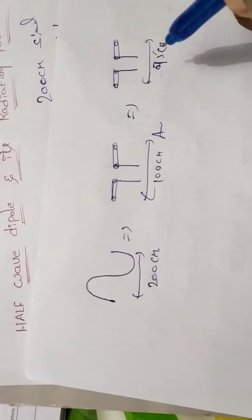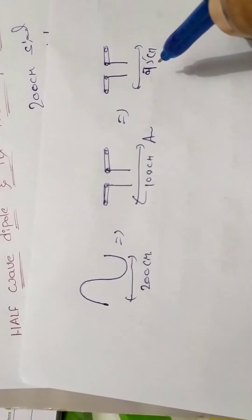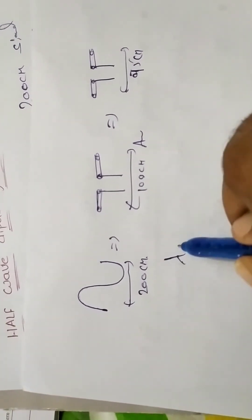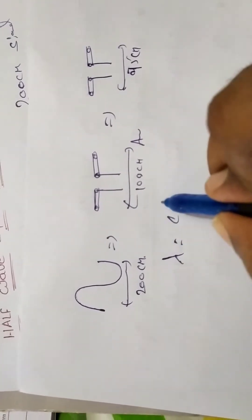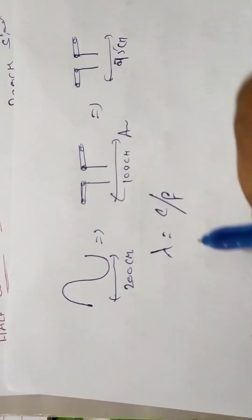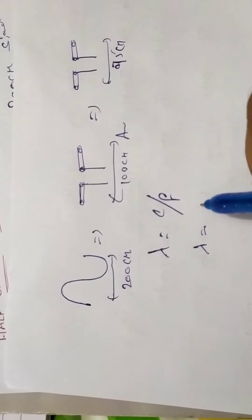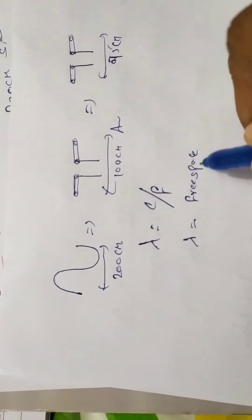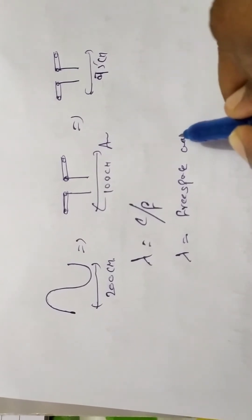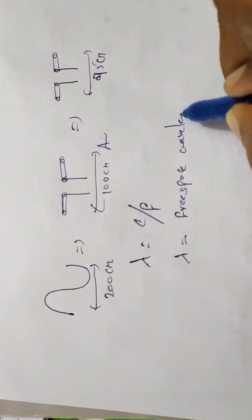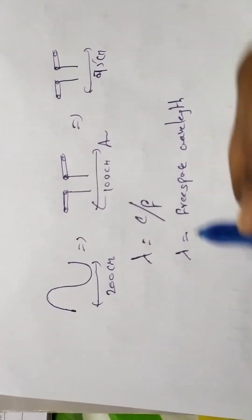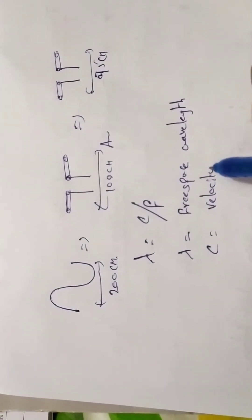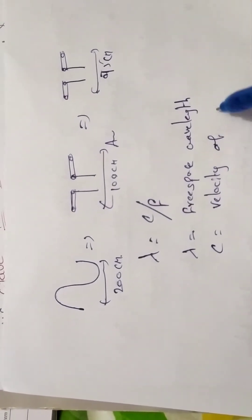I need to create this formula. This is free space wavelength. Lambda is c by f — lambda is the free space wavelength, c is the velocity of light.